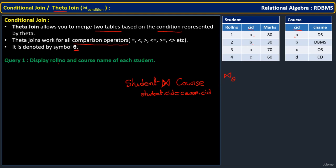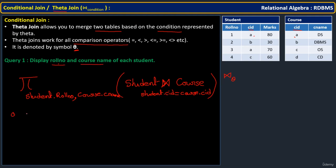Only those matching records are selected. From this result, what do we need? We need the roll number from the Student table and the course name from the Course table. So we write: student.roll_number and course.course_name — displaying the roll numbers and course names of each student.